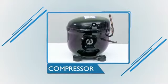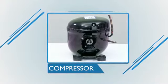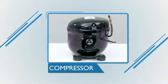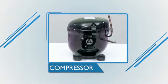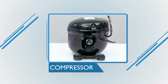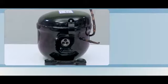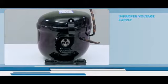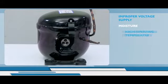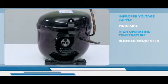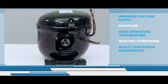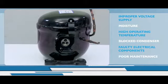Now let's talk about a compressor. In ice-lined refrigerator and deep freezer, commonly used compressors are of reciprocating type and hermetically sealed. This is a reciprocating type and hermetically sealed compressor. Compressor generally fails due to improper voltage supply, moisture in the system, high operating temperature, blocked condenser, faulty electrical components and largely due to poor maintenance.